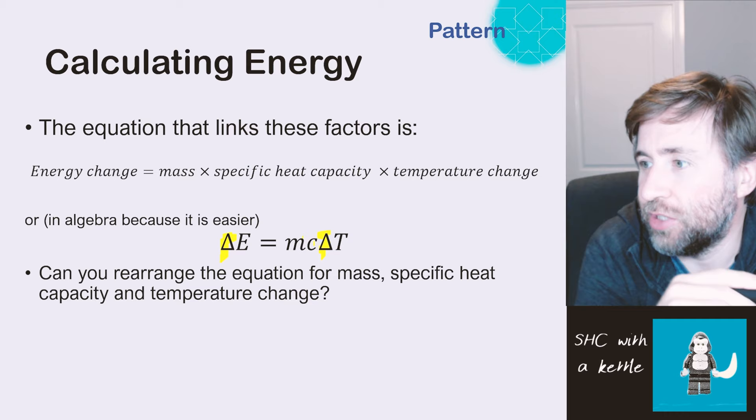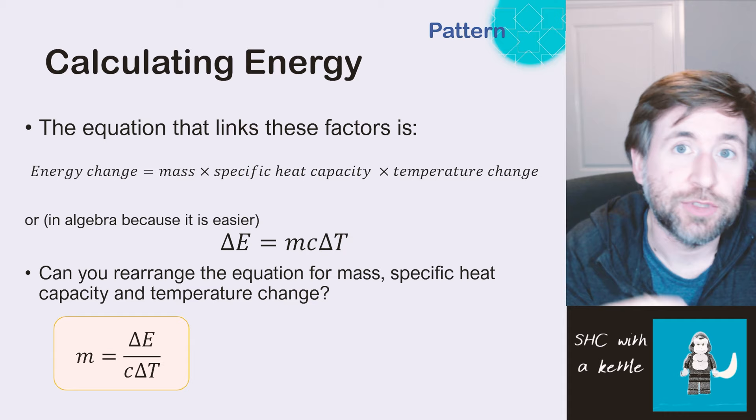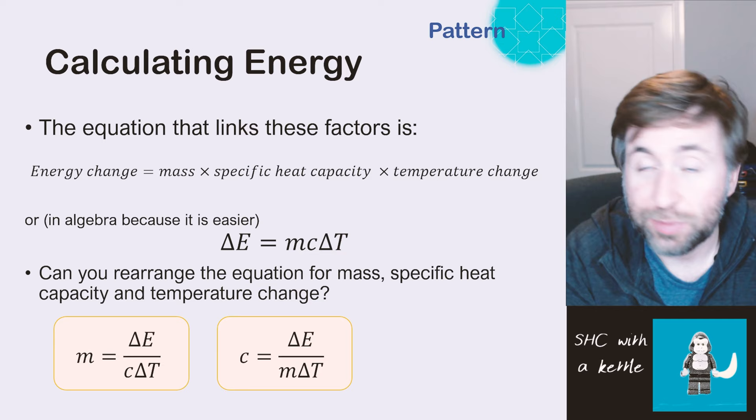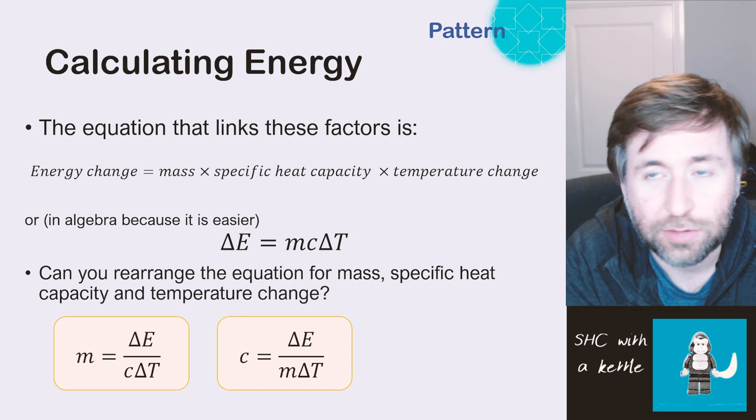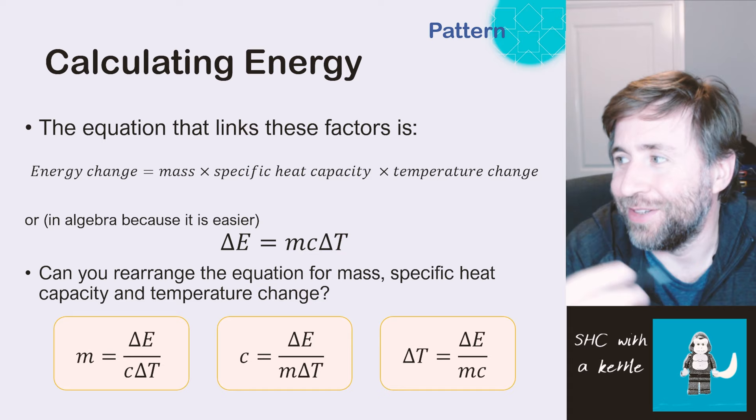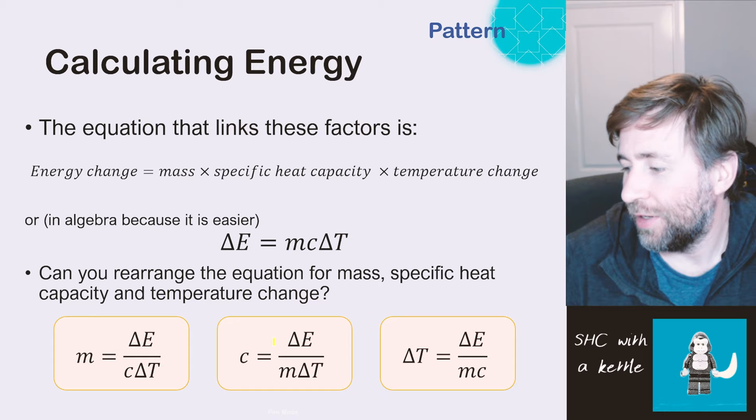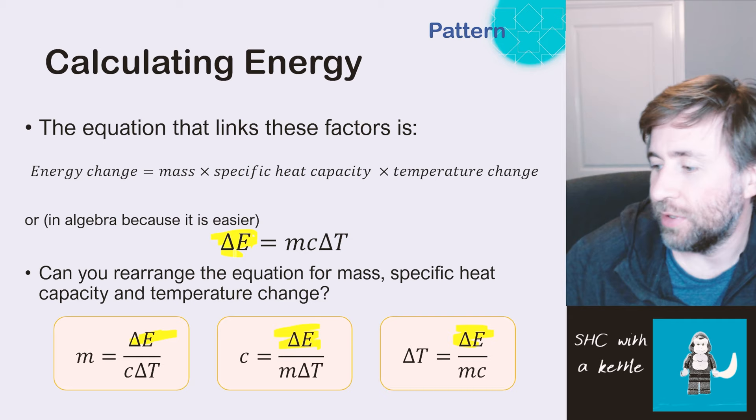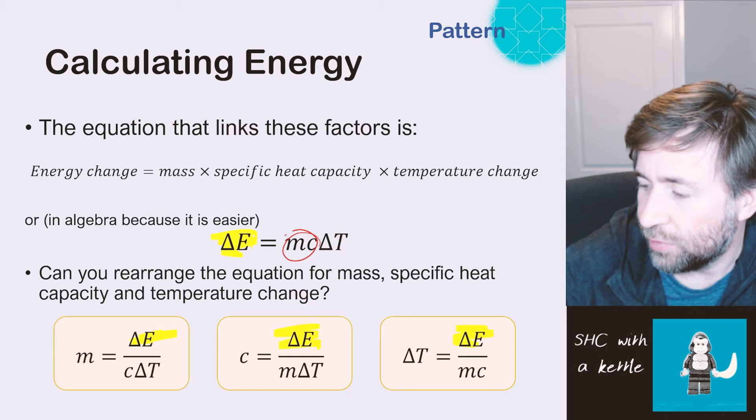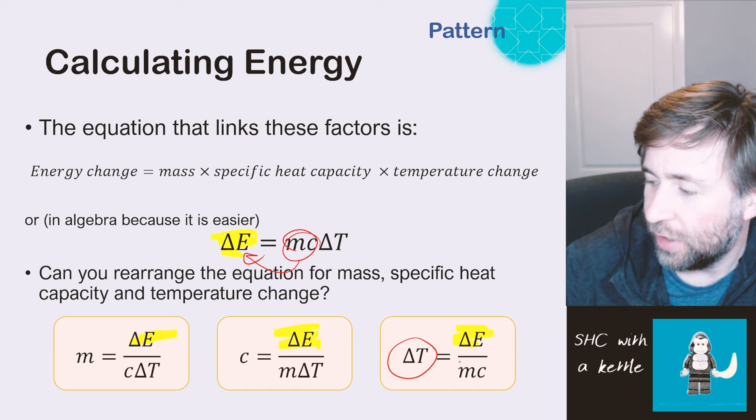And you need to be able to rearrange this type of equation into all the different forms. So here they are. So the mass is the energy change divided by the specific heat capacity times the temperature change. Or specific heat capacity is energy change over mass times temperature change. And that's the one we're going to use in a moment. And then if it's for temperature change, then energy change is on the top, and mass times specific heat capacity is on the bottom. So you can see then all of these involve delta E, the energy change being on the top, because the way you should learn to rearrange is by doing the inverse operations of things. So if you want to move something across, it goes to the bottom of a new fraction.